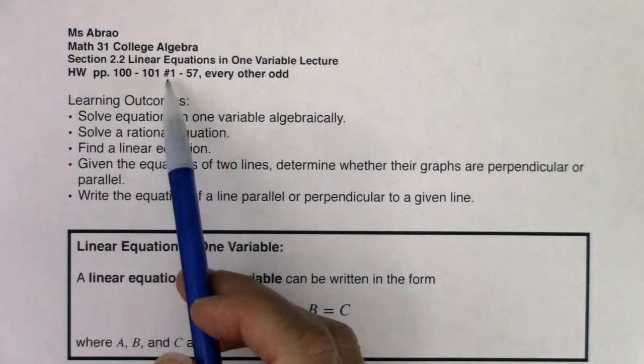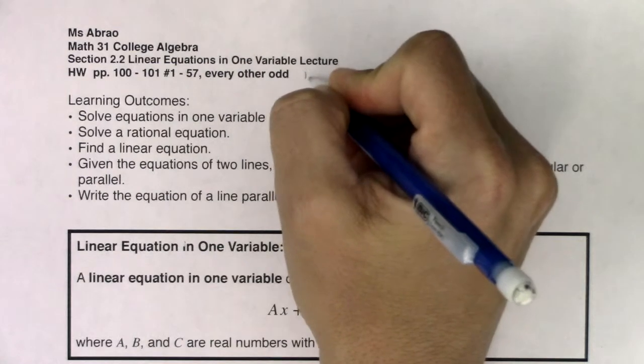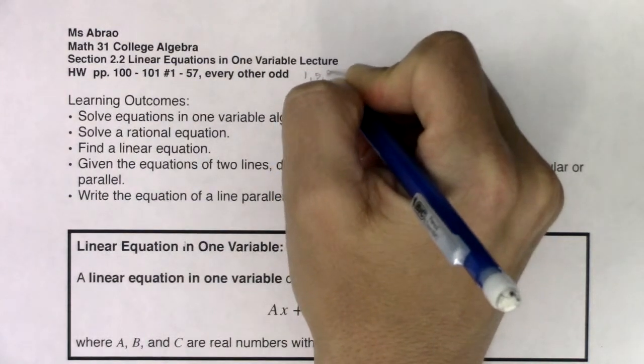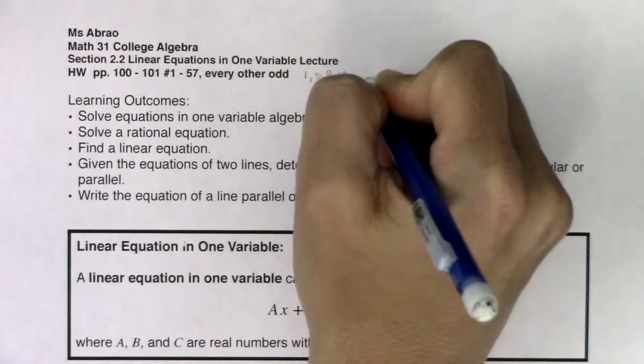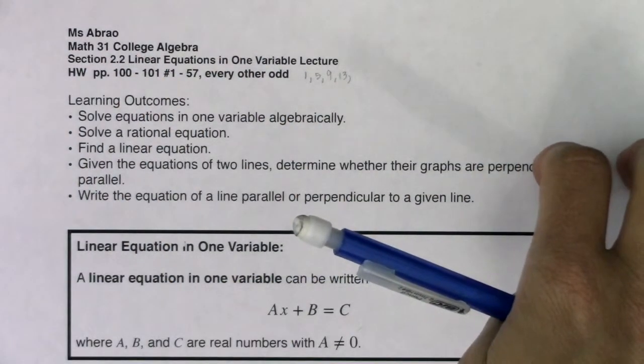Here's your homework. When I say every other odd, so 1 through 57, every other odd, that means 1, 5, 9, 13, and so on. Find all the odd numbers and just do every other one of those.